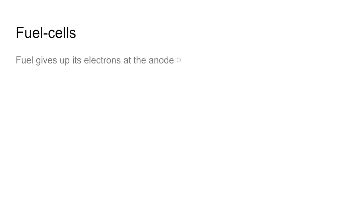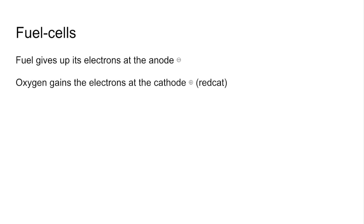Quick revision video on fuel cells. So some basics first. In all fuel cells, the fuel gives up its electrons at the anode — that's a negative electrode — and oxygen gains the electrons at the cathode — that's the positive electrode. And just a reminder of an easy way to remember that reduction takes place at the cathode: red cat.